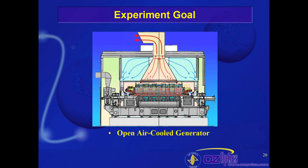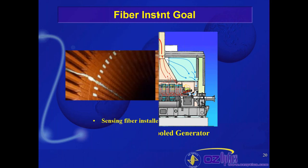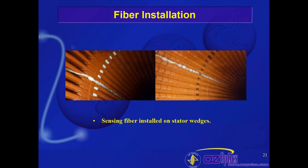Getting back to the actual implementation in a gas-cooled generator: here we have a schematic of a gas-cooled generator. The actual generator is the large, complex device in the middle. You can see airflow around the device — blue lines indicate cool air coming in and red lines indicate hot air being extracted. We also have a picture showing the installation of the fiber on what are called the stator wedges.